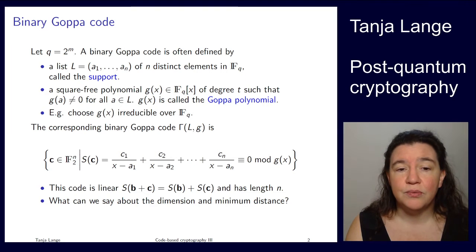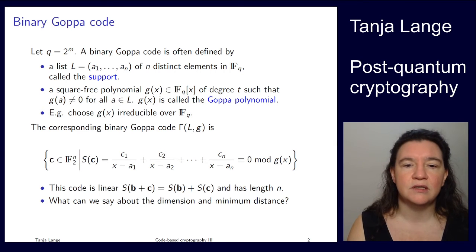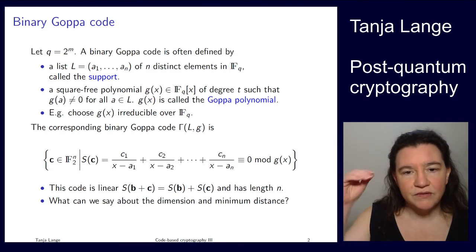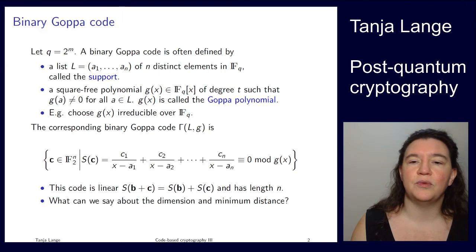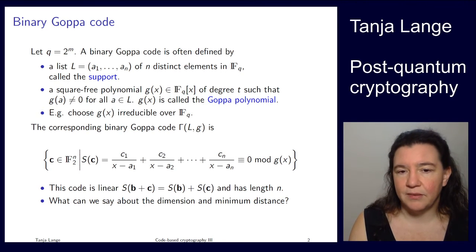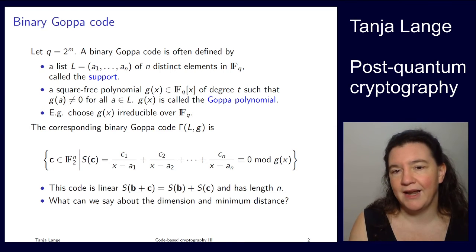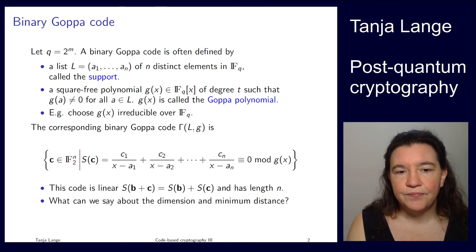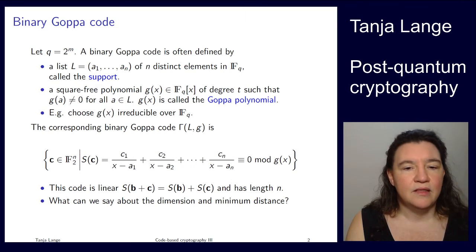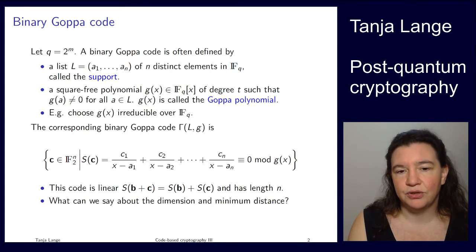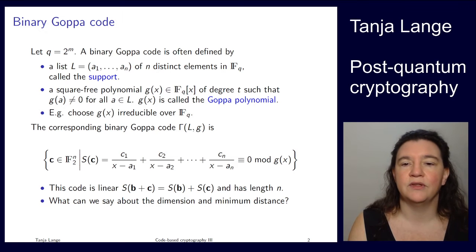Now I claim that this is a code. Well, let's first see that this is a linear subspace, that it's linear. You can see, if you're taking two code words, c and b, and so both of them satisfy that this gives zero mod g of x, then of course also their sum is zero mod g of x. The length is also easy to see, so it's just length n. That's the n we're putting in there by the length of the support. But then the minimum distance and the dimension are less obvious. In this talk, I'll show you the dimension. In the next talk, we're going to cover the minimum distance.